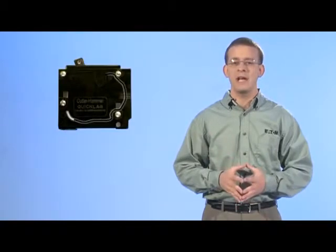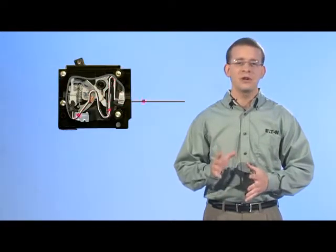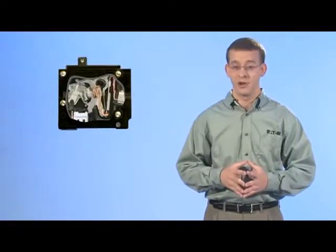It does this by way of an engineered bimetal that bends when current above its rating is applied across the circuit. It would only take a few seconds to trip the breaker if a high amount of excess current is being pulled through the circuit, but it could take several minutes if the current is just above the breaker's rating.